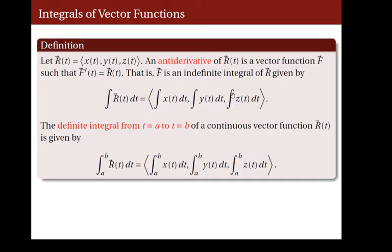We will also define the definite integral of r of t from t equals a to t equals b, provided that the function r is a continuous vector function. The definition of this definite integral is the vector-valued function whose coordinates are the integral of x of t dt from a to b, the integral of y of t dt from a to b, and the integral of z of t from a to b. Similar to the derivative of a vector function, the computation for the antiderivative and the definite integral of a vector-valued function is done component-wise.